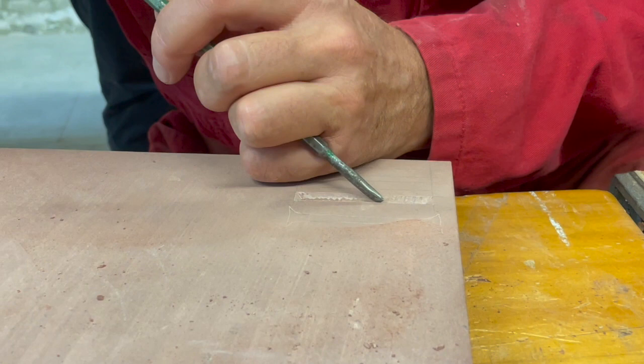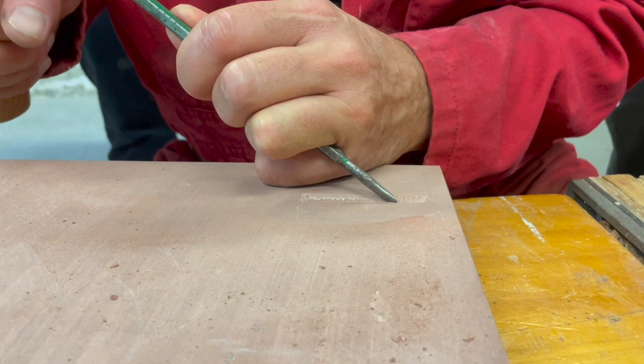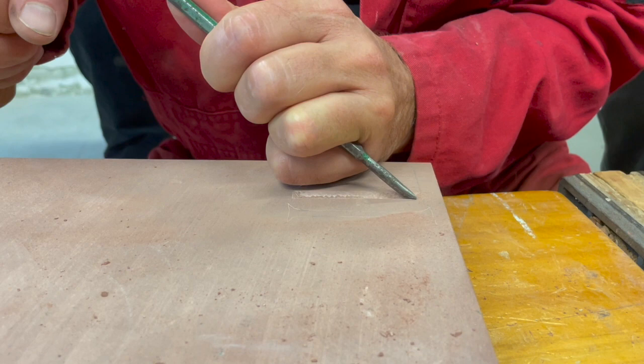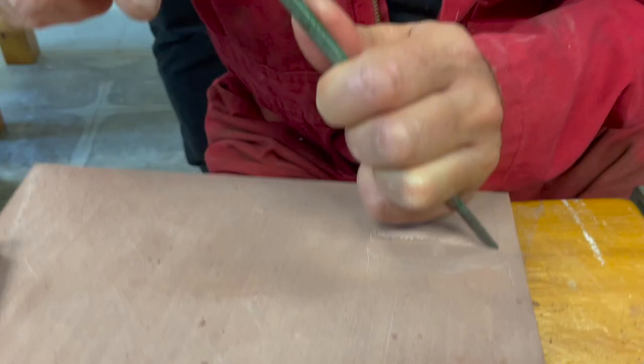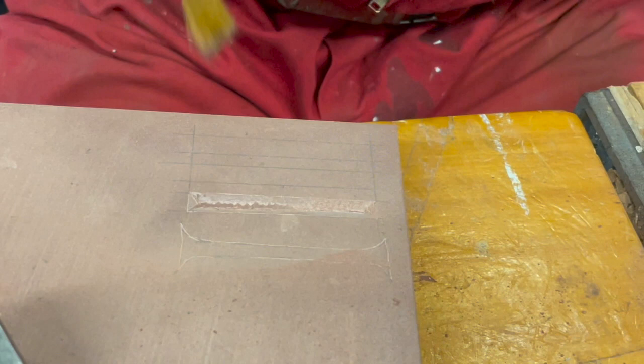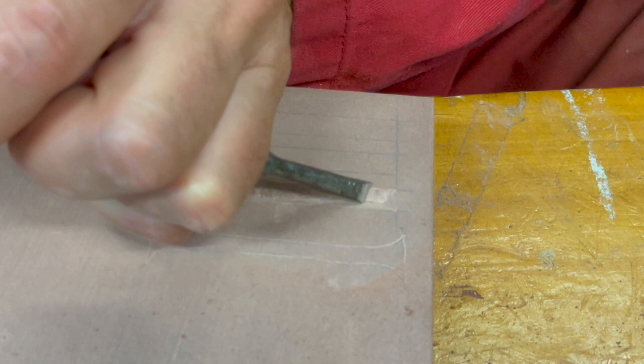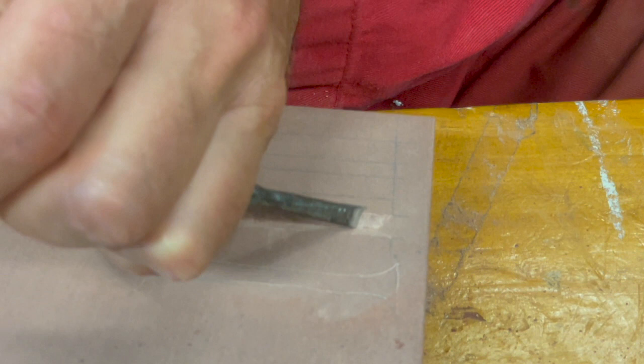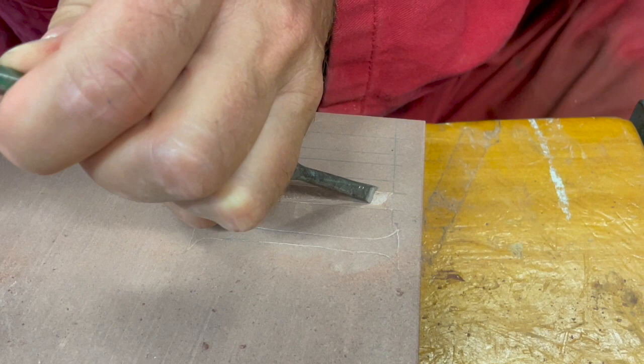And then at the end when you're almost finished you drive it into the corner like this because you want to have your corners. So not from here but into it but only at the very end. You drive your chisel into the corner.